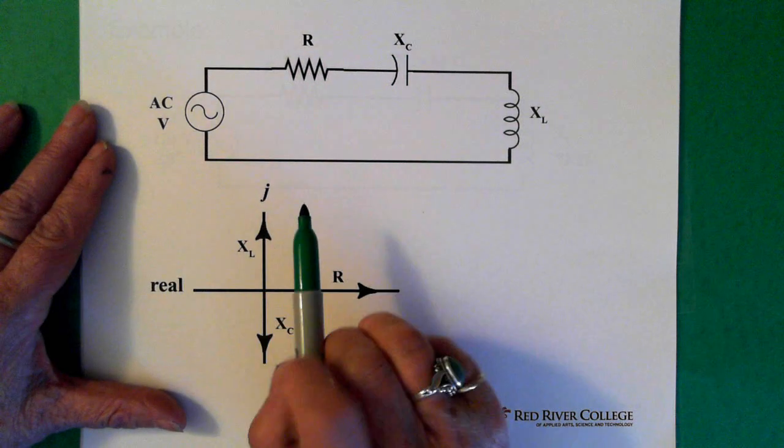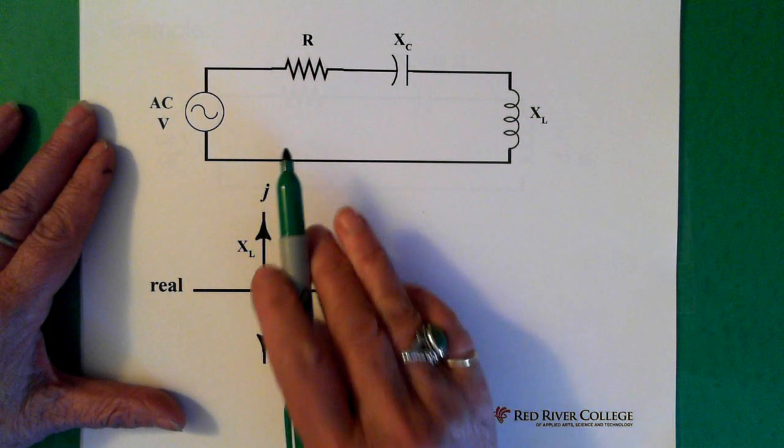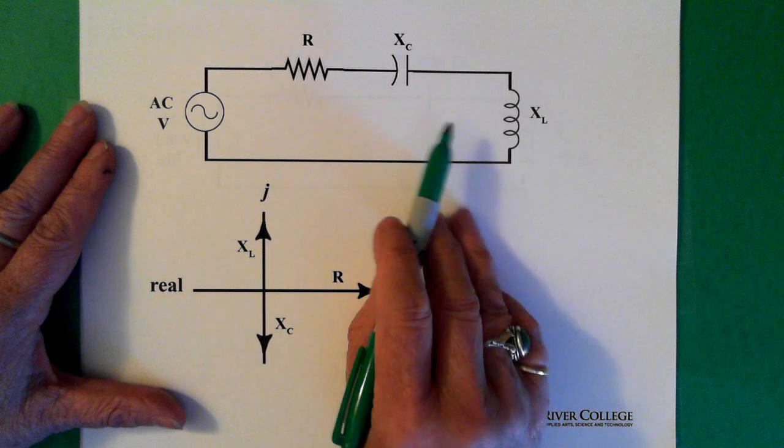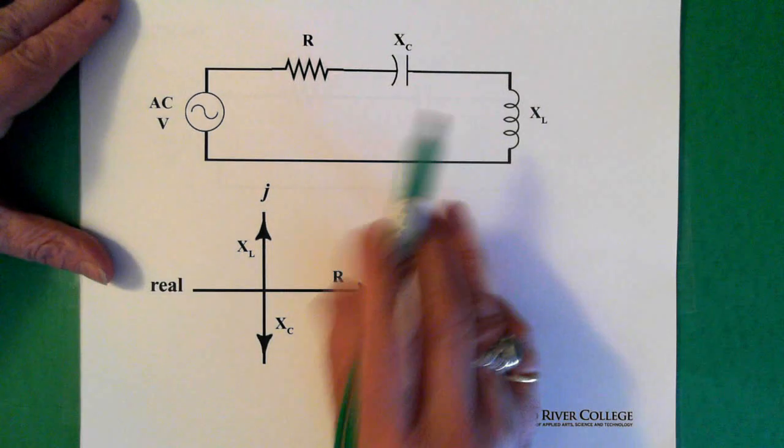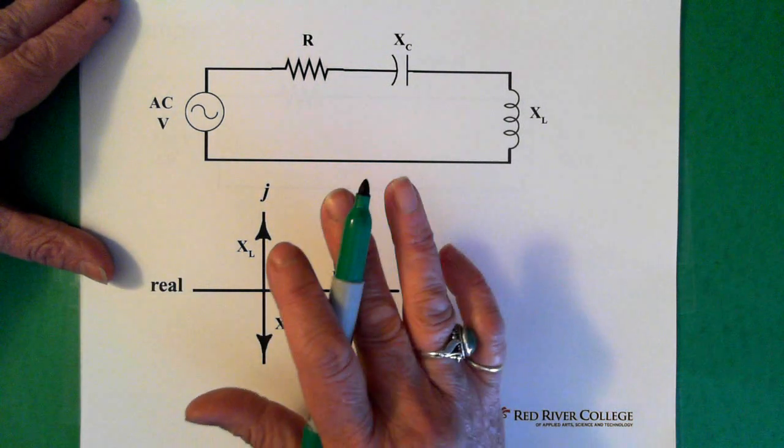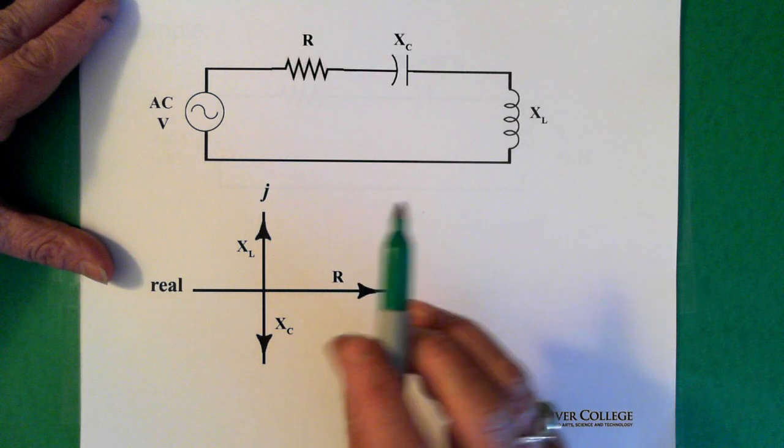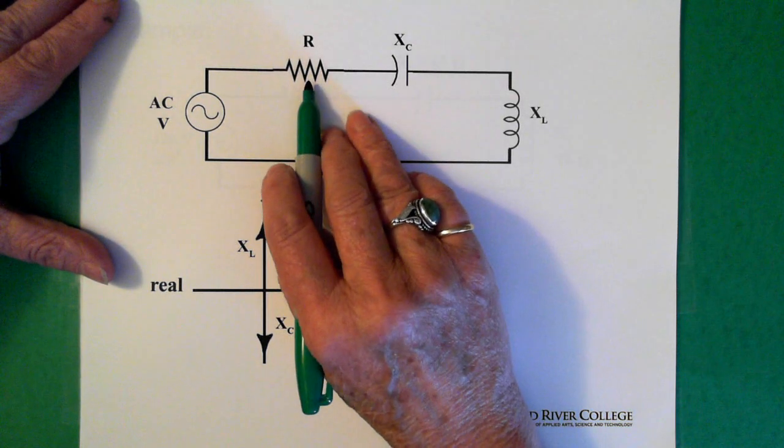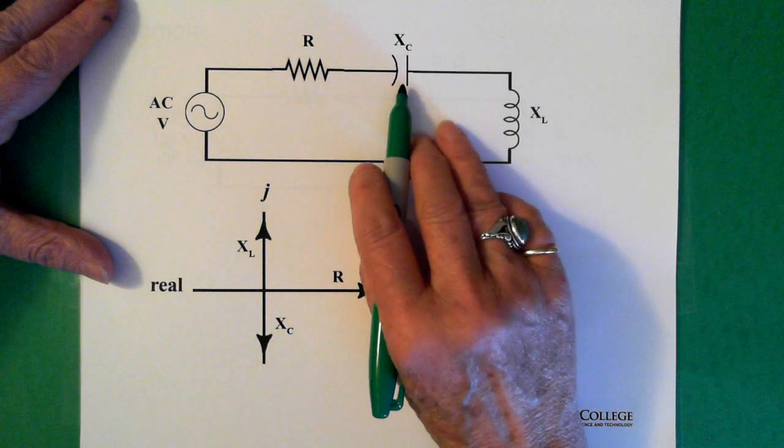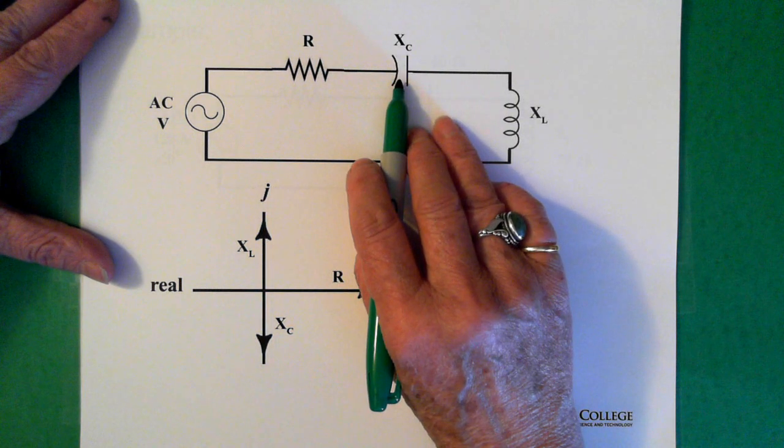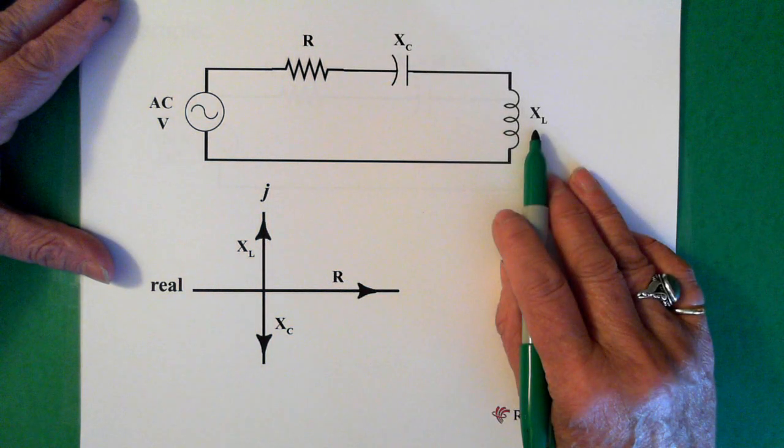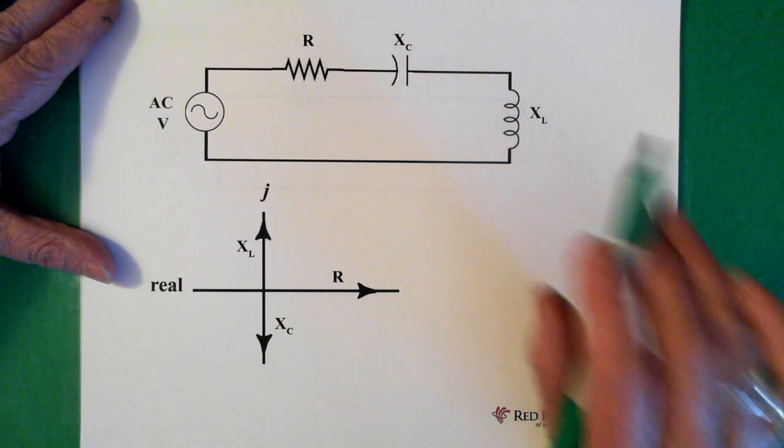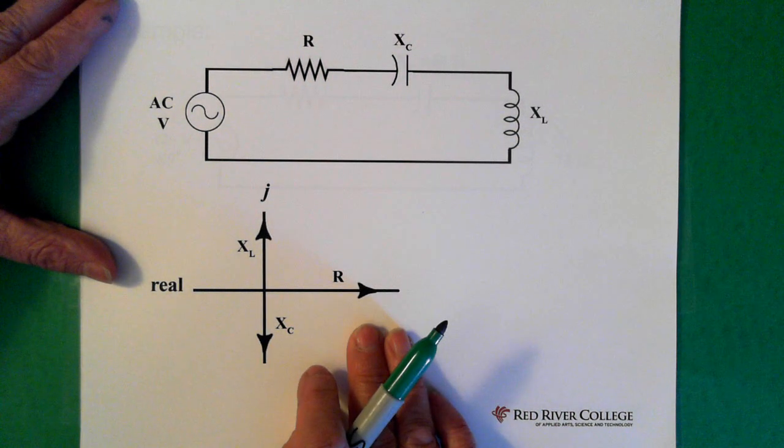Now, if we have a series AC circuit, which is what we have right here, all I'm concerned about right now is thinking about the complex numbers and what that looks like. So we see we have a resistance, we have a capacitive reactance, and an inductive reactance.